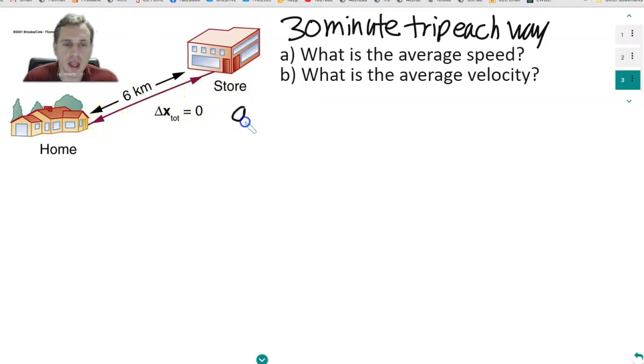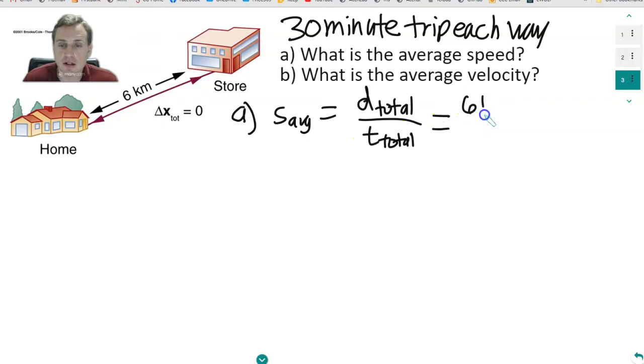Okay, so in part a, the average speed s_avg is going to be the total distance divided by the total time. So what is that? That is going to be 6 kilometers plus 6 kilometers over 30 minutes plus 30 minutes.